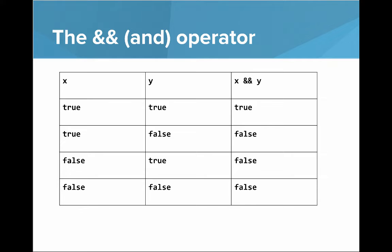The AND operator gives you a true value if both of the things on the side of the AND operator are true. So if X is true and Y is true, then X AND Y is true.